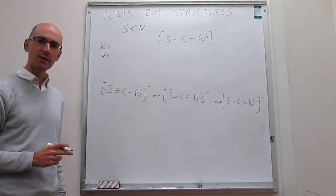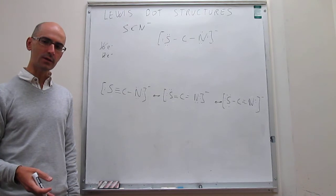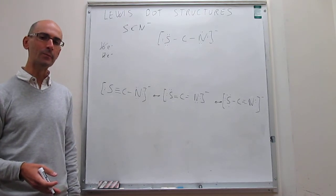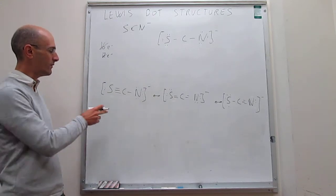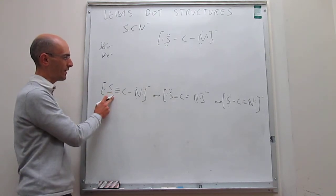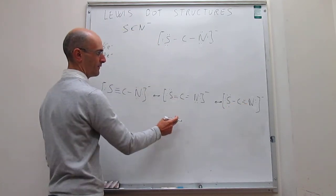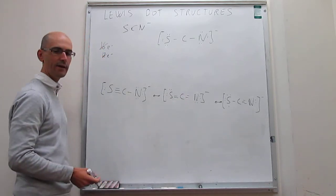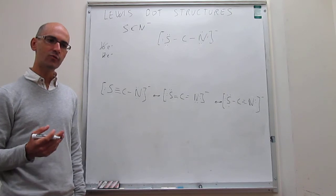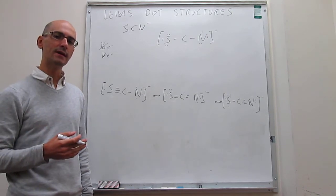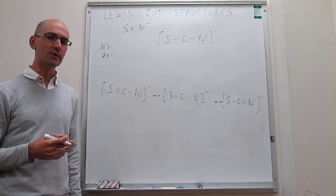So we have three resonance structures, but something interesting happens here. Unlike the cases of ozone and nitrate reviewed in a prior video, in this case those resonance structures are actually not identical. Notice how one has a triple bond between sulfur and carbon, another has a triple bond between carbon and nitrogen, and the third has only a double bond between each of the pairs. It turns out there is a way to determine which Lewis dot structure is most appropriate, and that is by using the concept of formal charge.